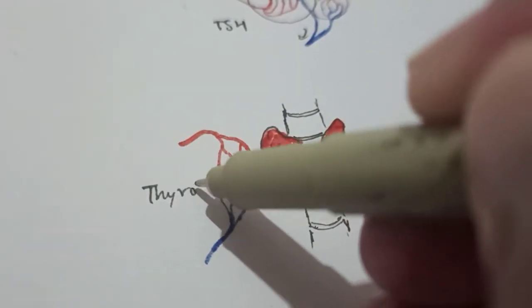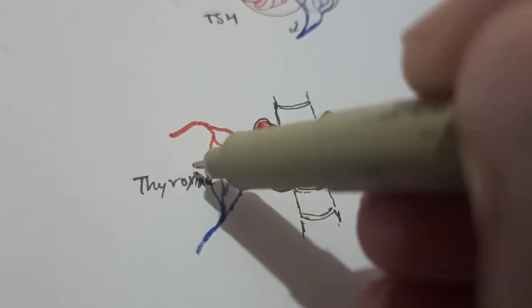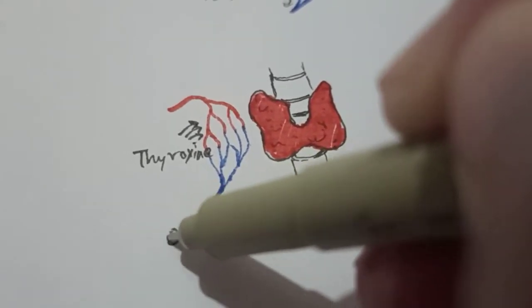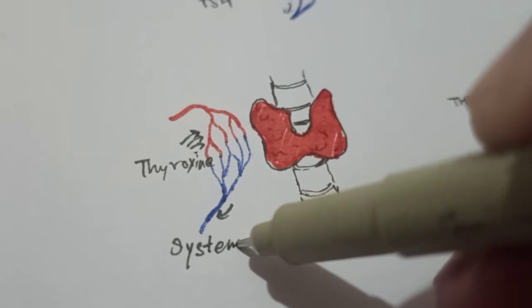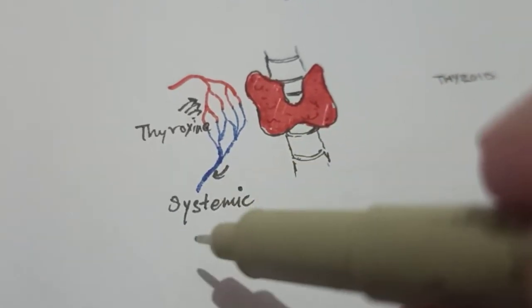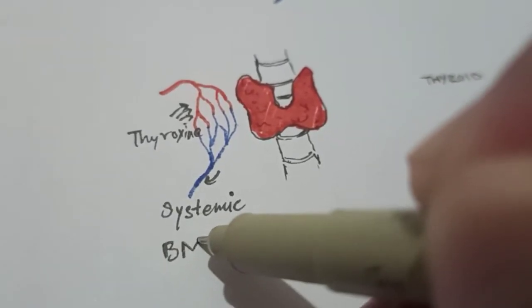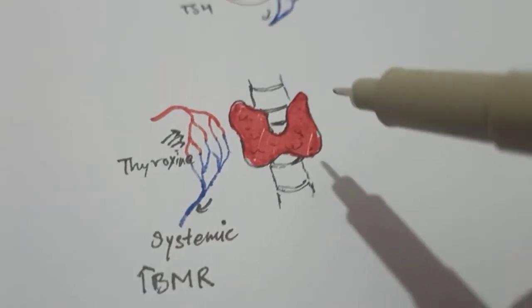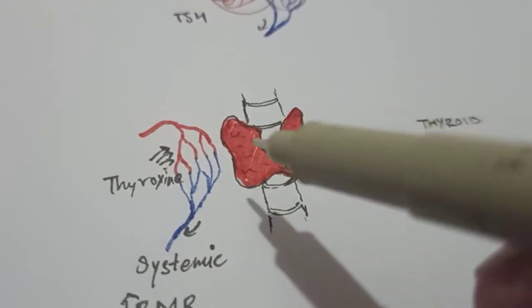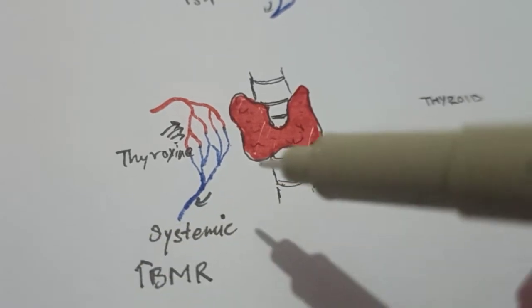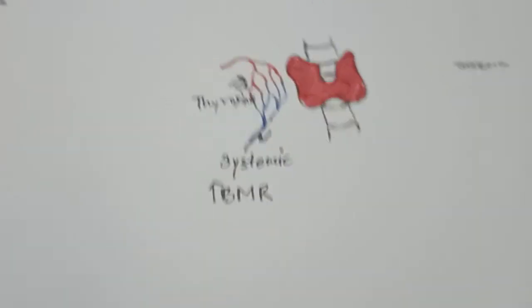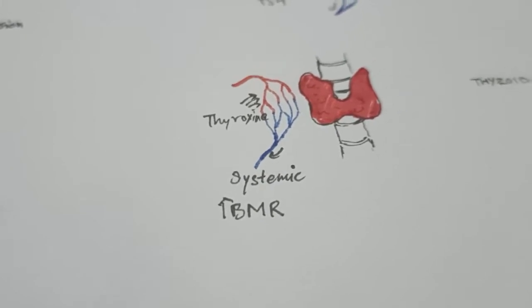TSH is carried by the blood to the thyroid gland, where the thyroxine hormone is produced. Thyroxine then enters the bloodstream and is distributed systemically throughout the entire body. This systemic distribution increases the basal metabolic rate, because thyroxine is responsible for increasing the BMR. The thyroxine floats through the entire body and increases the body's metabolic rate, controlling all different types of metabolism.